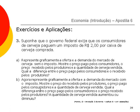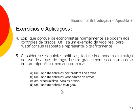A macroeconomia precisa de exercitar igual nós fizemos lá com a microeconomia. Questão 4 - explique por que os economistas normalmente se opõem aos controles de preços, utilize um exemplo da vida real para justificar sua resposta e represente graficamente. Questão 5 - considera as seguintes políticas todas almejando a diminuição do uso de armas de fogo, ilustre graficamente cada uma delas em um hipotético mercado de armas: A) o imposto sobre os compradores de armas; B) o imposto sobre os vendedores de armas; C) um preço mínimo para as armas; D) o imposto sobre a munição.